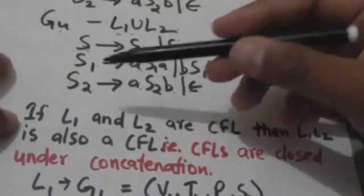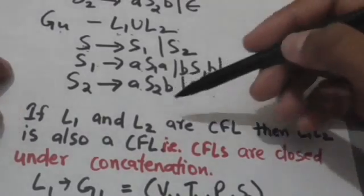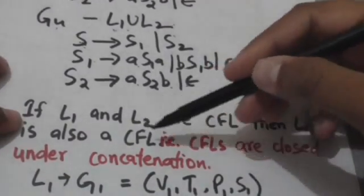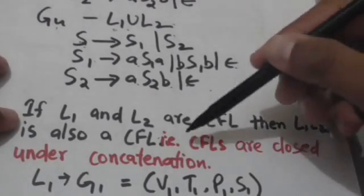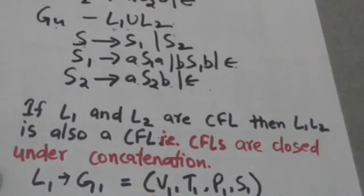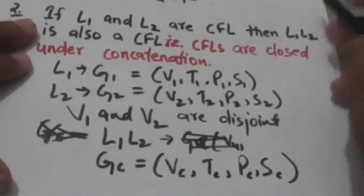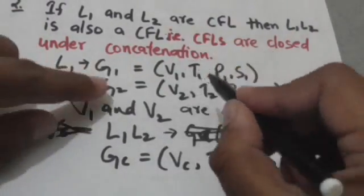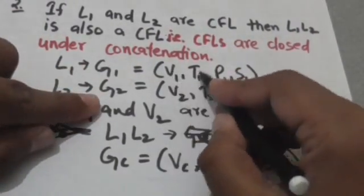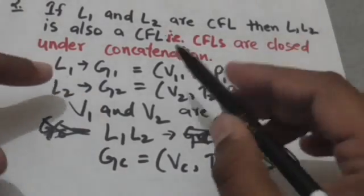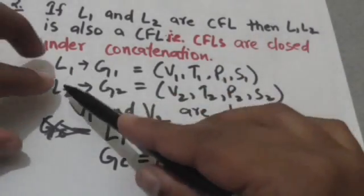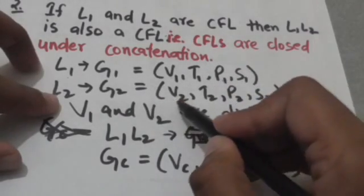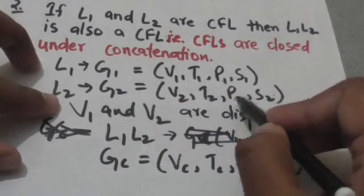The next property is: if L1 and L2 are context-free languages, then L1 concatenated with L2 is also a context-free language — that is, context-free languages are closed under concatenation. Suppose L1 has grammar G1 defined by quadruple (V1, T1, P1, S1), and L2 has grammar G2 defined by quadruple (V2, T2, P2, S2).